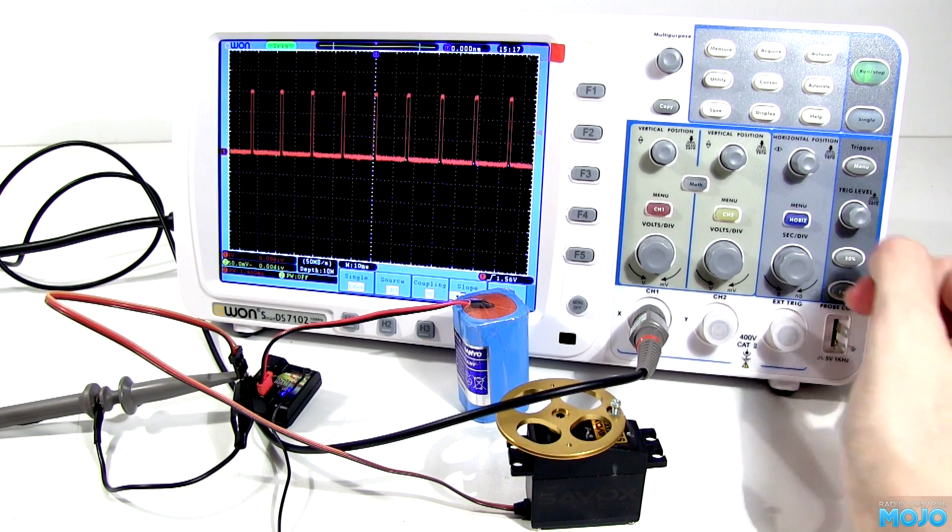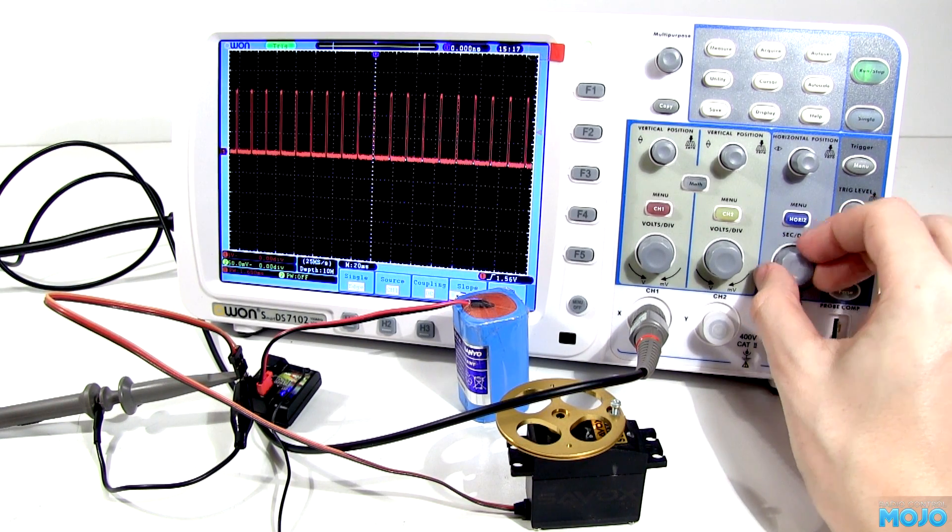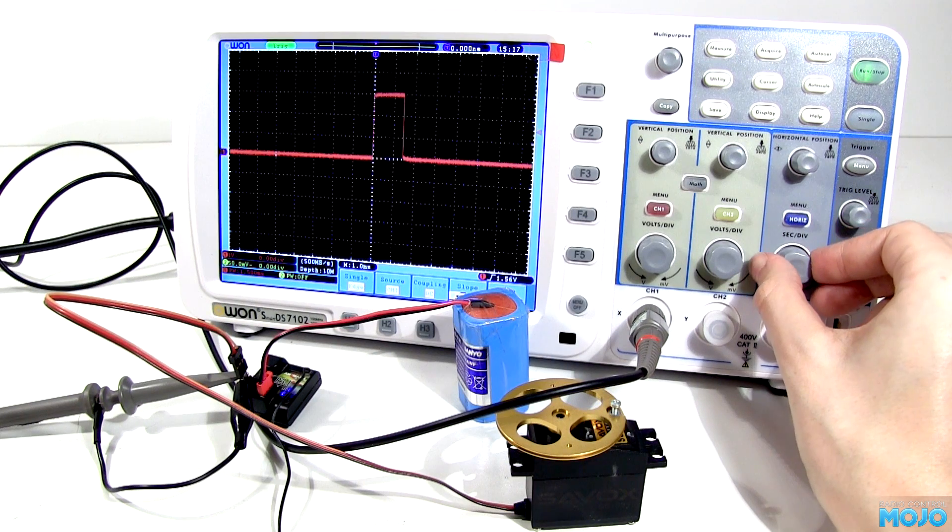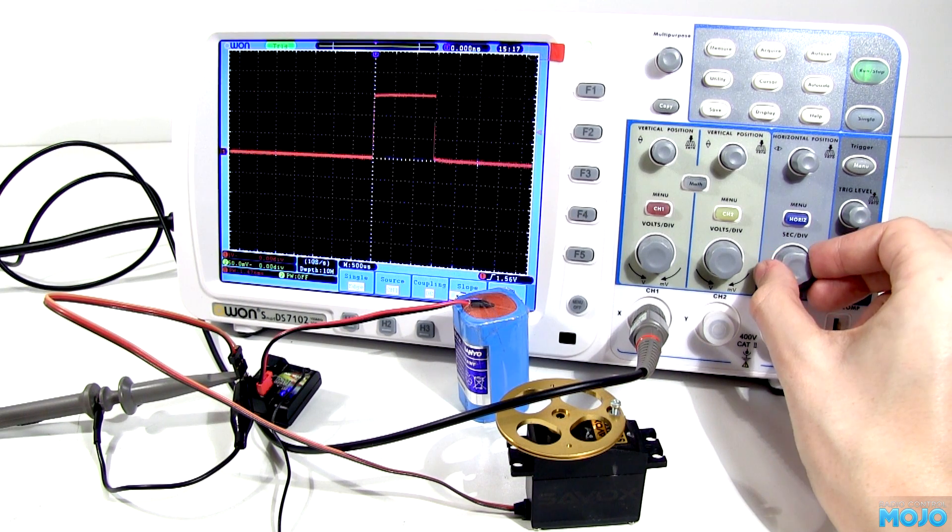Remember, the meter is averaging over a long period. So with the pulse train being mostly low, the average voltage is also going to be quite low.